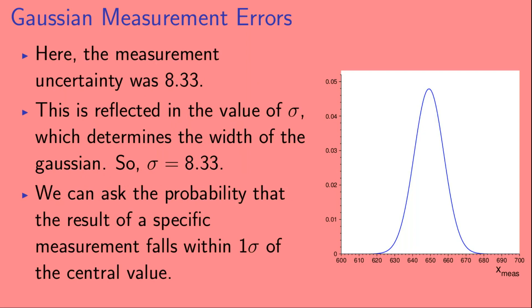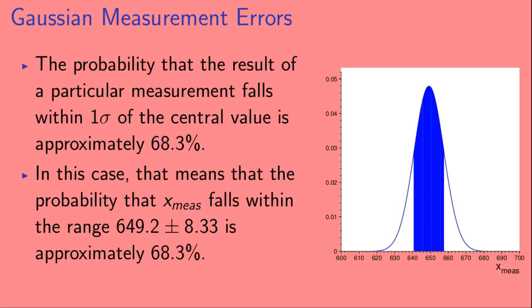So here the measurement uncertainty was 8.33. This is reflected in the value of sigma, which determines the width of the Gaussian, so sigma equals 8.33. We can ask the probability that the result of a specific measurement falls within one sigma of the central value. The probability that the result of a particular measurement falls within one sigma of the central value is approximately 68.3%. In this case, that means that the probability that x_meas falls within the range 649.2 minus 8.33 and 649.2 plus 8.33 is approximately 68.3%.